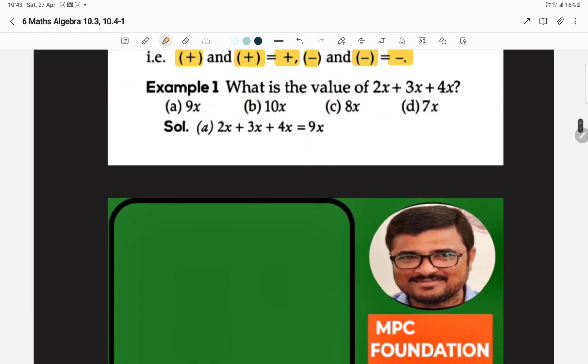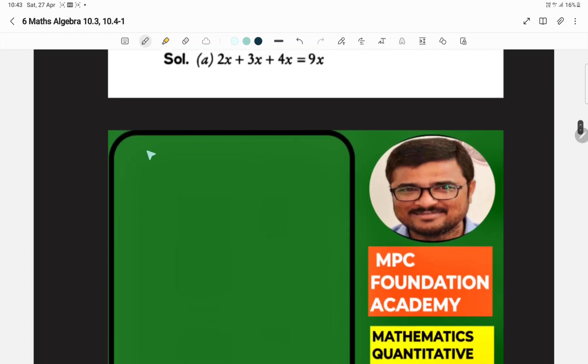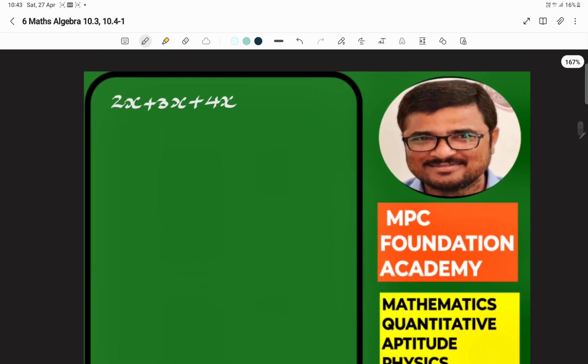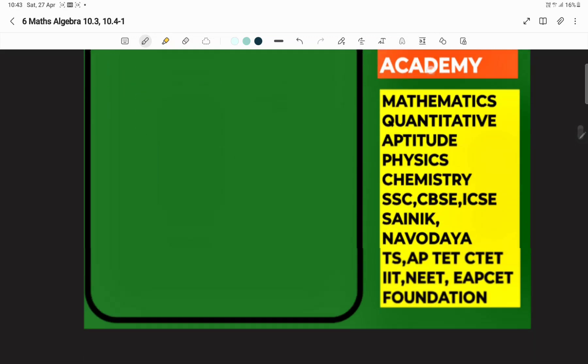For example, what is the value of 2x plus 3x plus 4x? If we add 2x plus 3x plus 4x, we will add 2 plus 3 equals 5, 5 plus 4 equals 9. The answer is 9x.